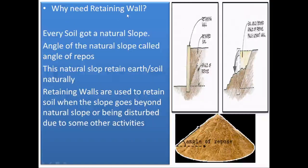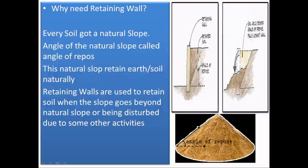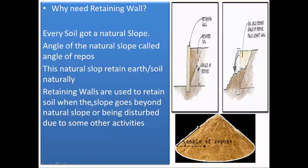Why do we need a retaining wall? Every soil has a natural slope, as shown in this figure. This is the natural slope and the angle of this natural slope is called the angle of repose. This natural slope can retain earth or soil naturally. But retaining walls are used to retain soil when the slope goes beyond the natural slope or is disturbed due to some other activities.